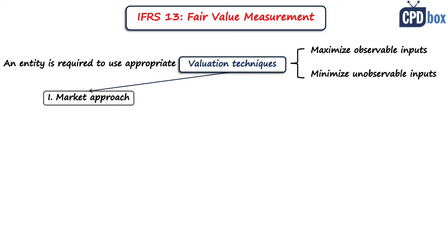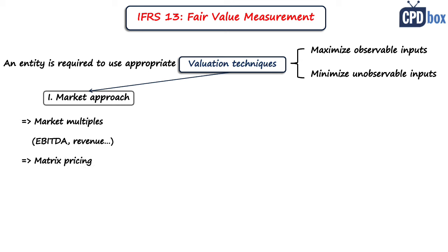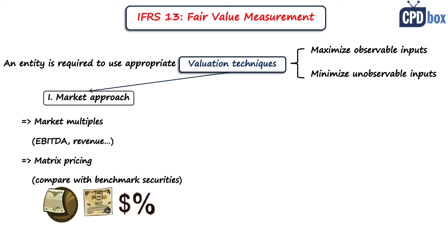The market approach uses market prices of similar assets or liabilities. For example, you can use market multiples derived from a set of comparables — a typical example is the use of an EBITDA multiple for valuing a business. Another example is matrix pricing, a mathematical technique used principally to value certain types of financial instruments.